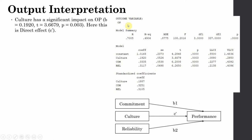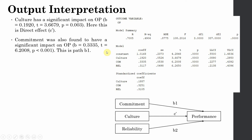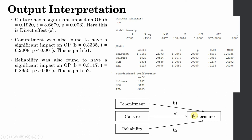Performance is the next outcome variable, affected by culture, commitment, and reliability. The impact of culture on performance (c-prime, the direct effect) is assessed, while commitment's impact on performance (b1) and reliability's impact on performance (b2) are also examined. Commitment was found to have a significant impact on organizational performance with p-value less than 0.001, and reliability also had a significant impact with p-value less than 0.001. All three paths are significant.